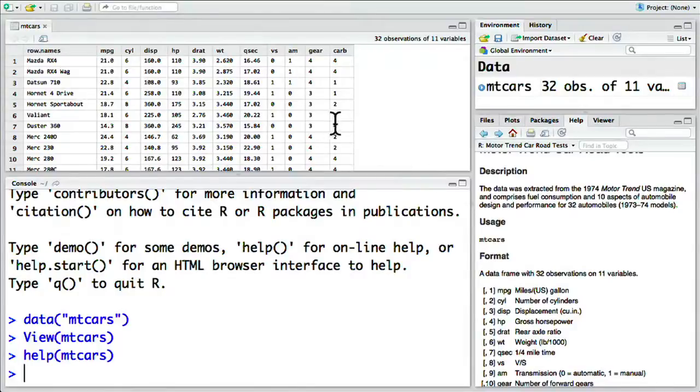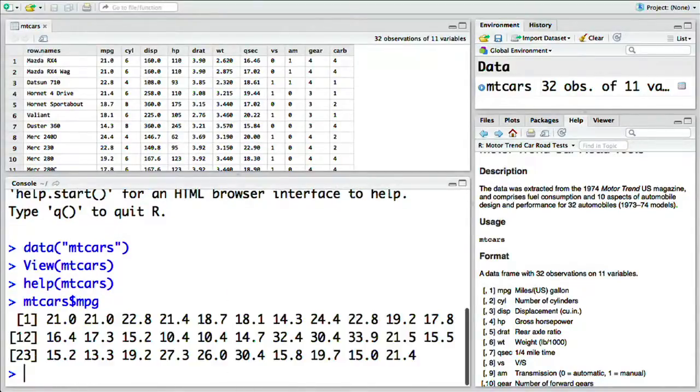Notice that each line of MT Cars represents one model of car, which we can see in the row names. Each column is then one attribute of that car, such as the miles per gallon or fuel efficiency, the number of cylinders, the displacement or volume of the car's engine in cubic inches, whether the car has an automatic or manual transmission, and so on. Recall that we can access one of these columns using the dollar sign. For example, MT Cars dollar sign MPG extracts the vector of each car's miles per gallon.